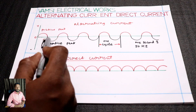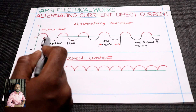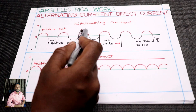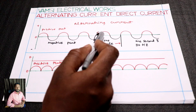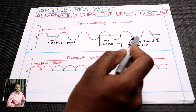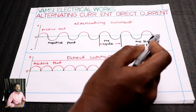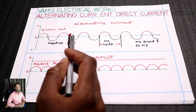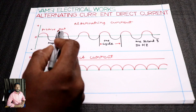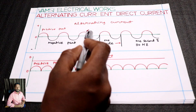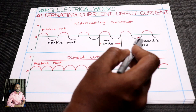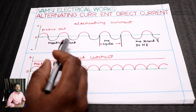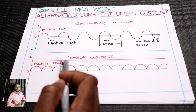In alternating current, the voltage and current are different. In one second, there are 50 cycles. There is a voltage and current in alternating current, and separately there is direct current — DC.